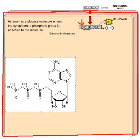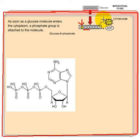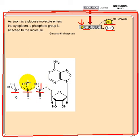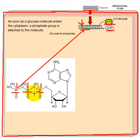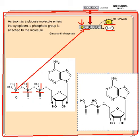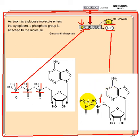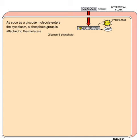Where does this phosphate come from? We use one molecule of ATP here. That ATP is converted to ADP. An ATP molecule has three phosphates; we take one phosphate and attach it to the carbon molecule, leaving ADP with two phosphates. So a three-phosphate molecule becomes a two-phosphate molecule.